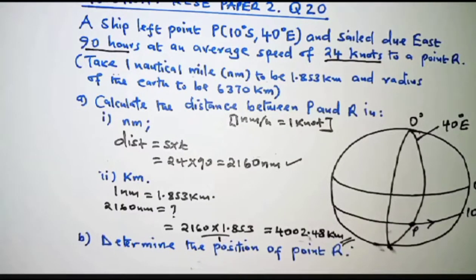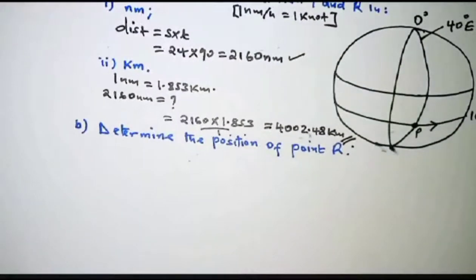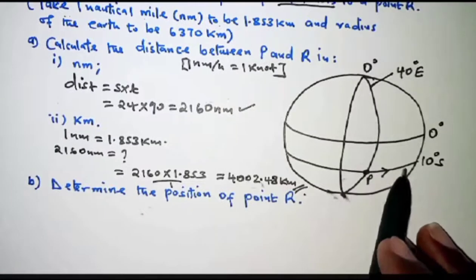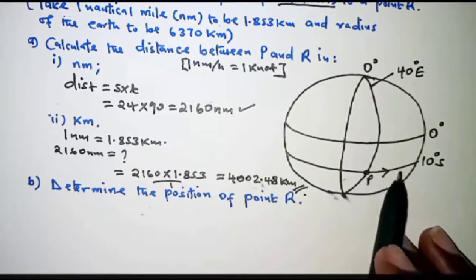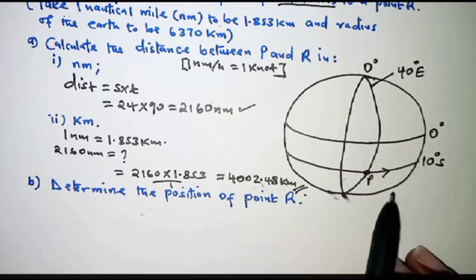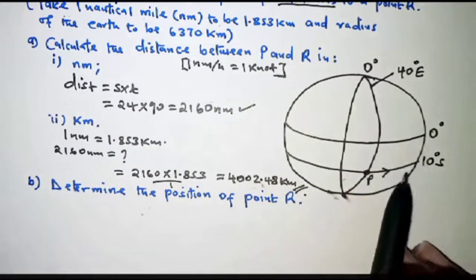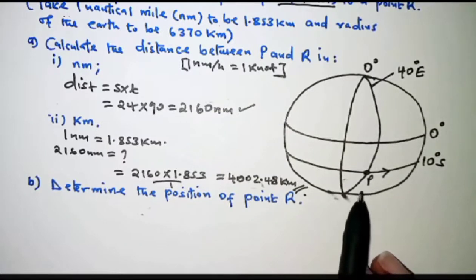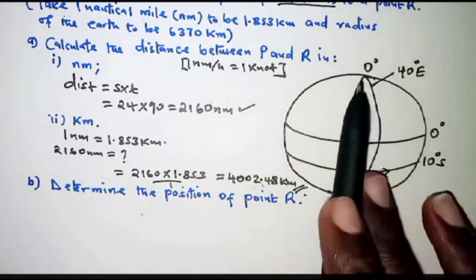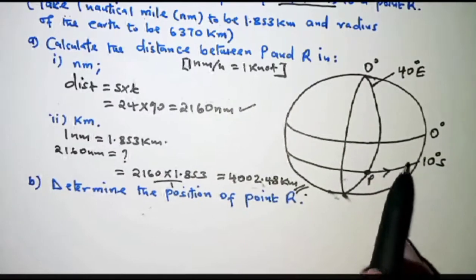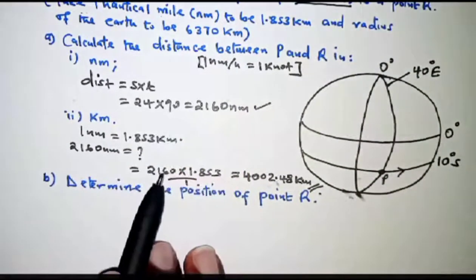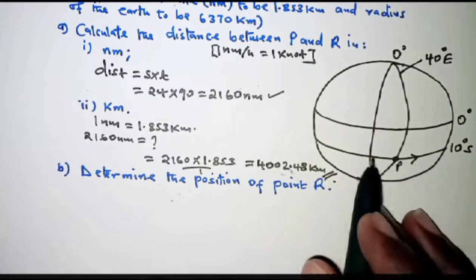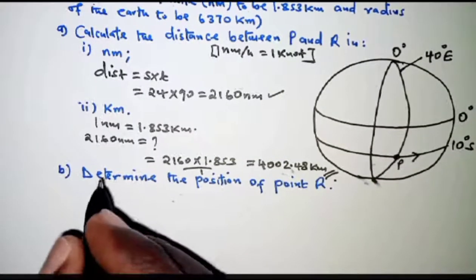Moving on to part B, we are required to determine the position of R. The ship left P heading east to R, so R lies on some longitude east of P. We need to find that longitude. To get it, we first find the angle difference between longitude 40 degrees east and the longitude where R lies. We'll use the distance in nautical miles. Since the ship moves along a latitude, we apply the relevant formula.